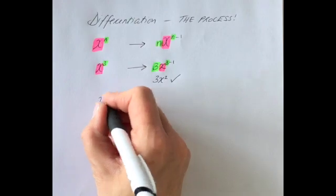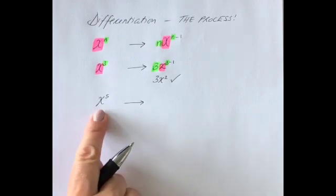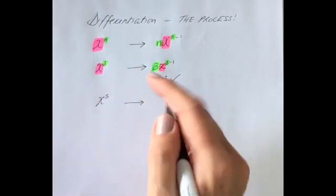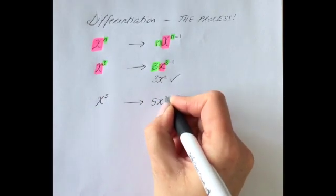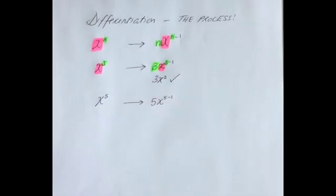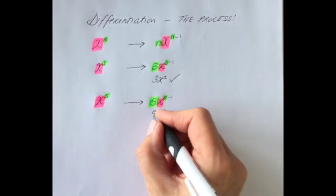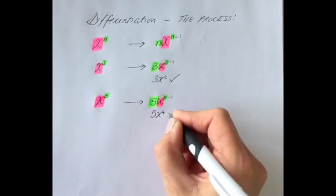Let's try another example. Let's say you had x to the power of 5. Pause the video and write down x to the power of 5 differentiated. So we bring down the power, keep our x, and then do the power take away 1. And so that simplifies to 5x to the power of 4.